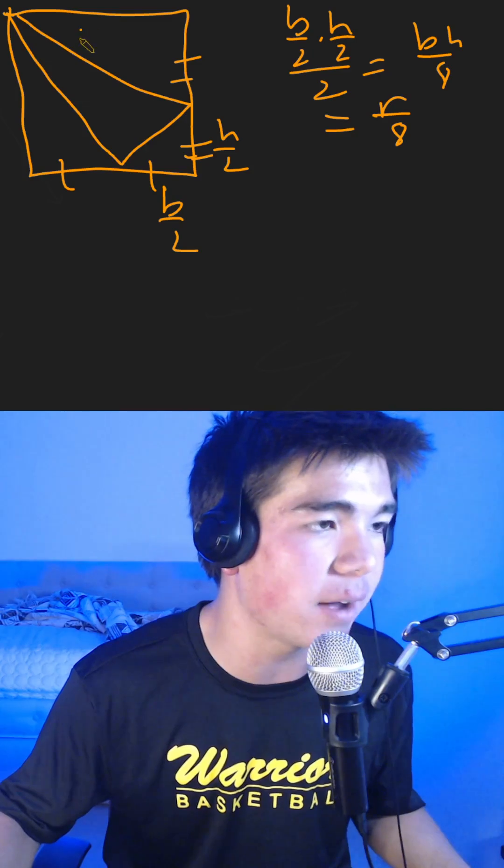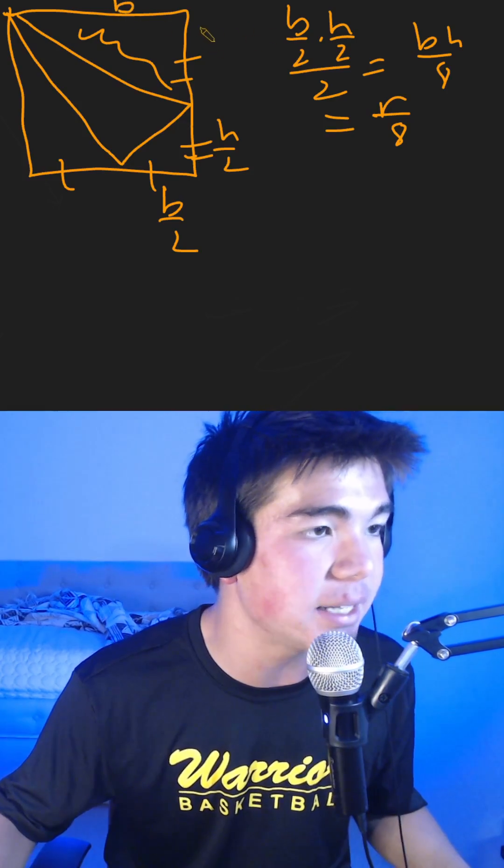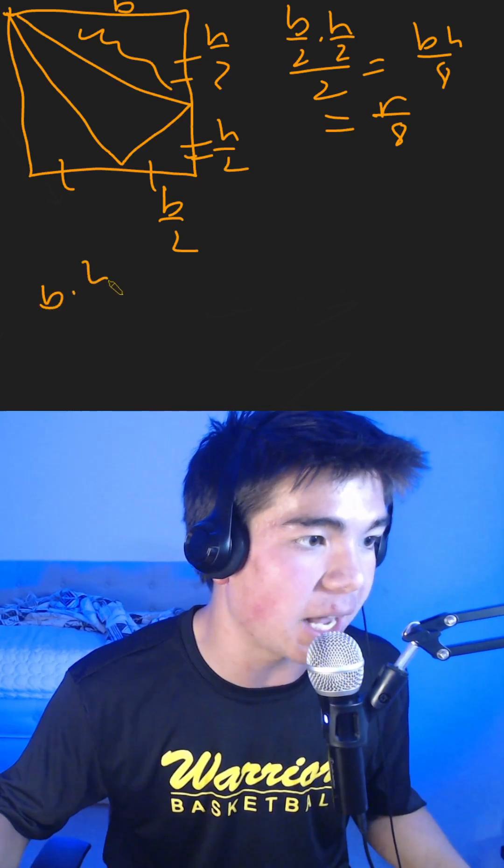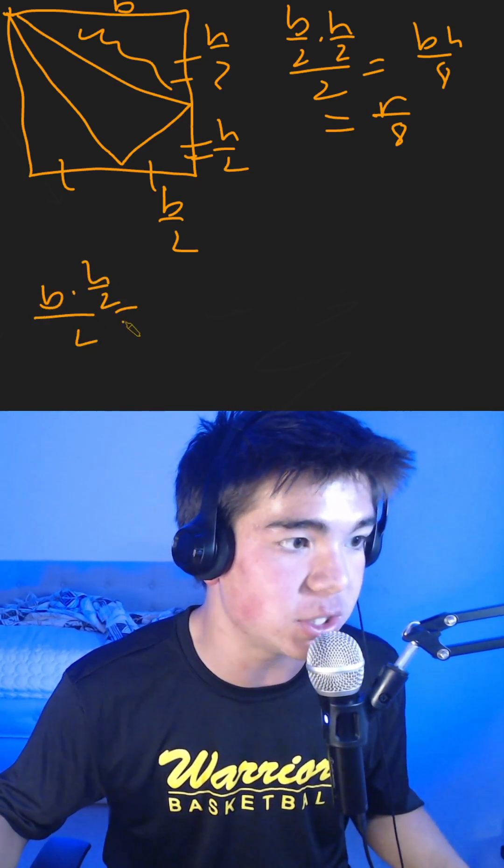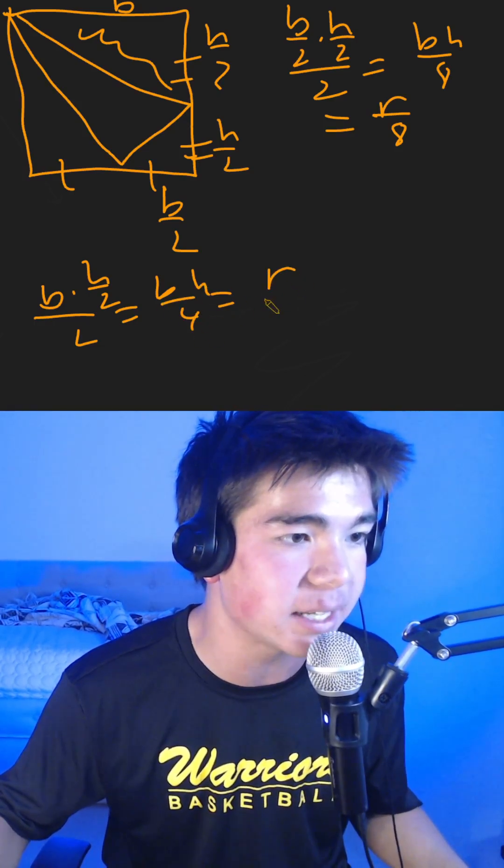So now let's try and find the area of this triangle right here. We know that the base of this triangle is B, and the height is h over 2. So the area of this triangle is B times h over 2, divided by 2, which is equal to base times height over 4. And this is equal to the area of the rectangle divided by 4.